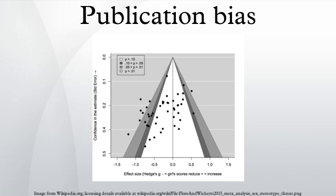Attempts to identify unpublished studies often prove difficult or are unsatisfactory. One effort to decrease this problem is reflected in the move by some journals to require that studies submitted for publication are pre-registered. Several such registries exist, for instance the Center for Open Science.